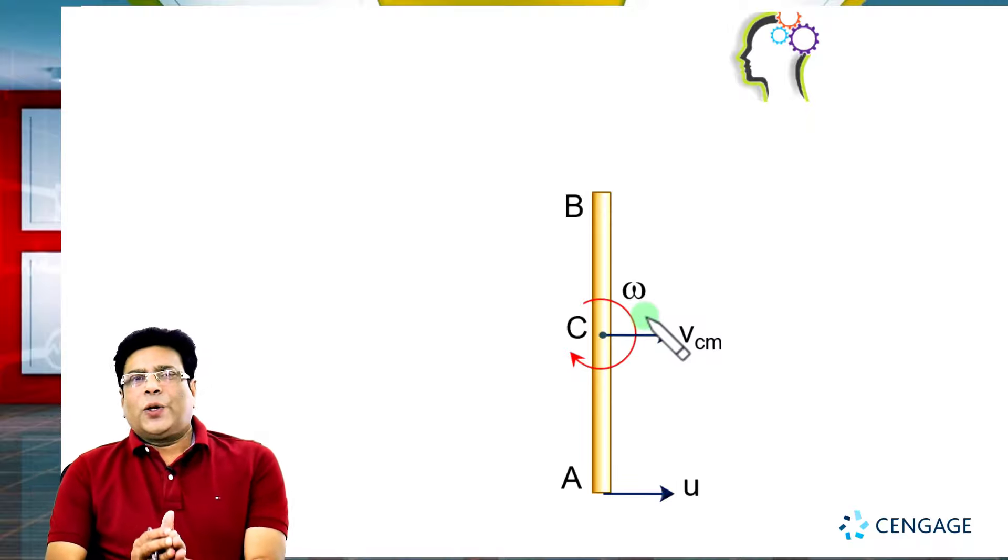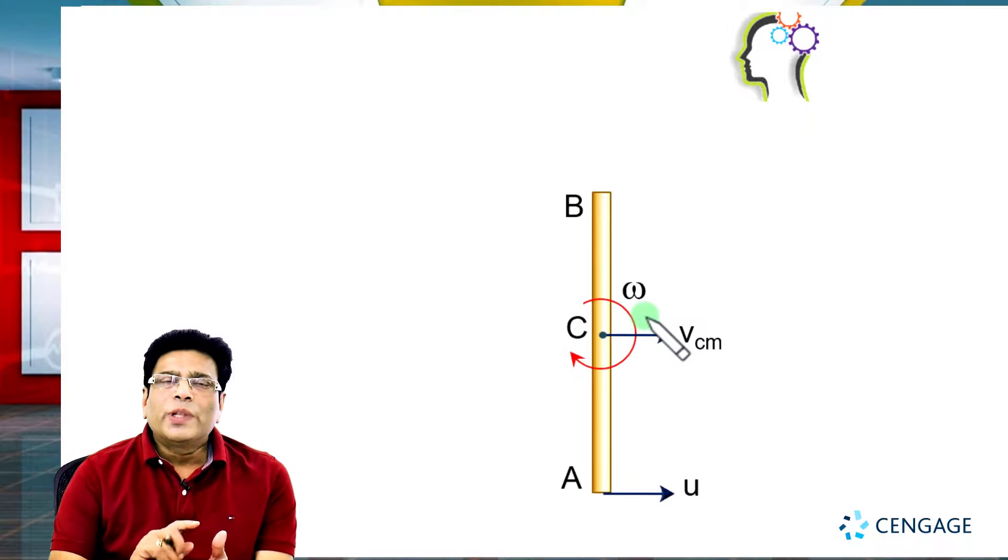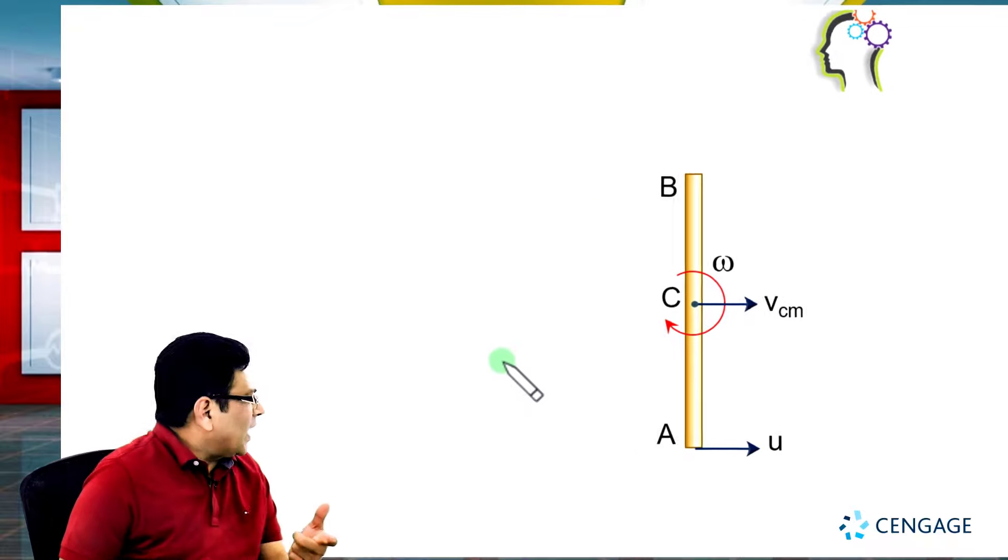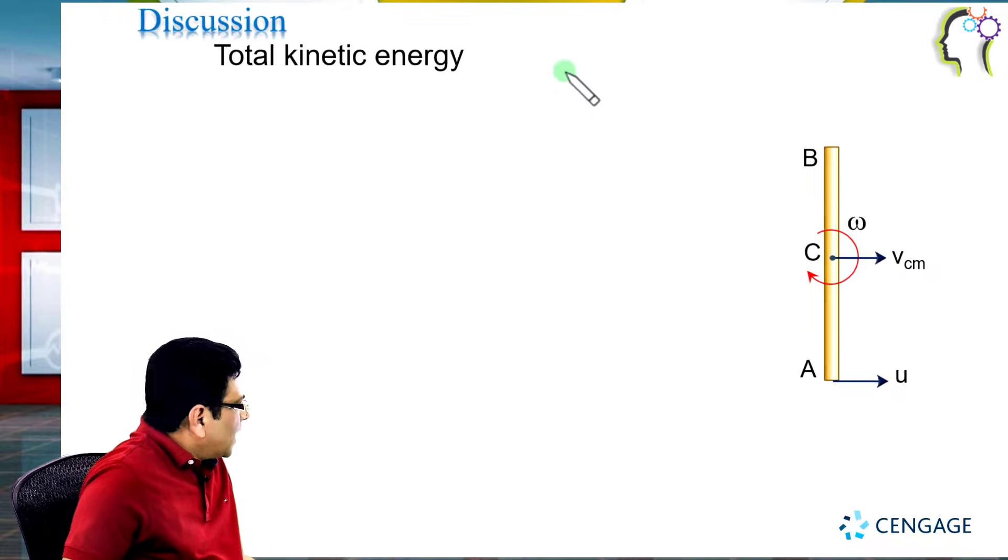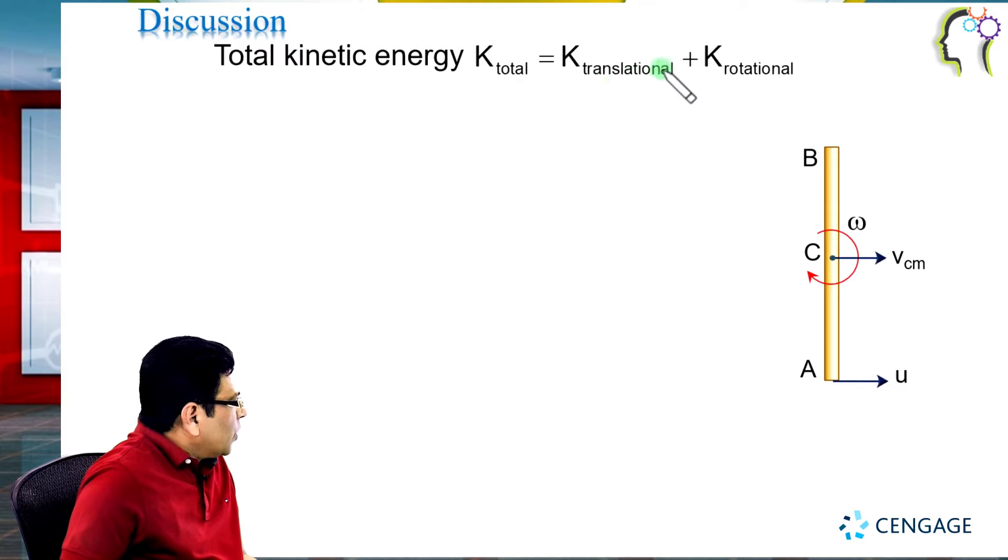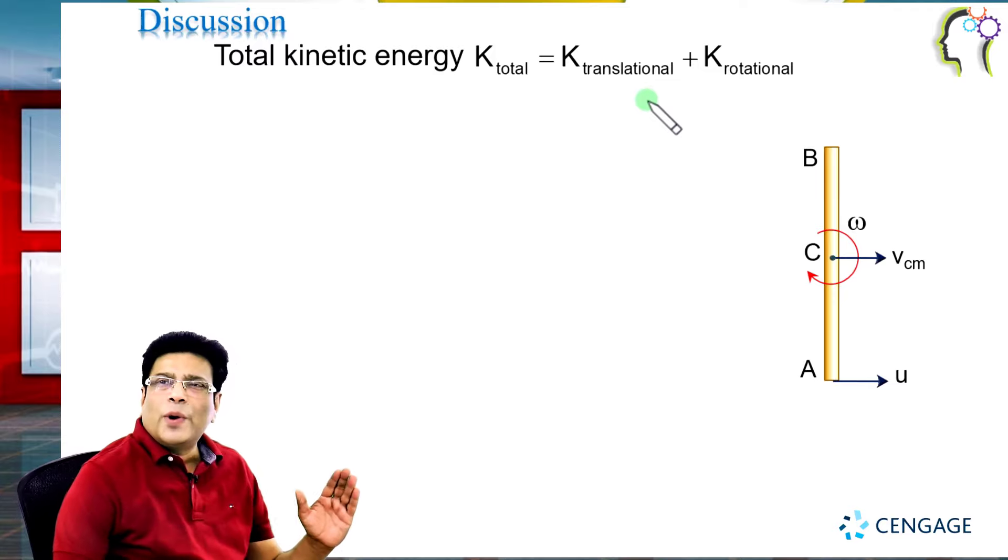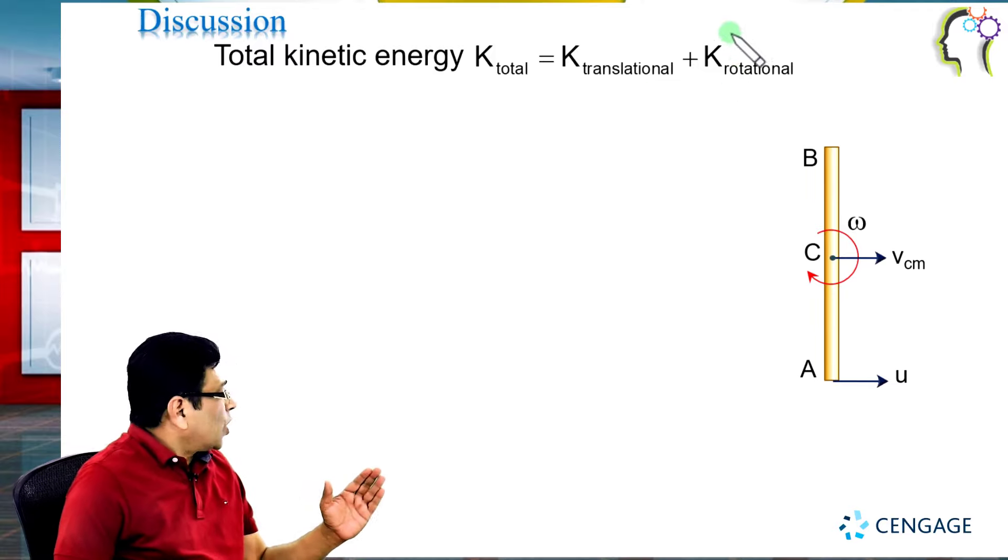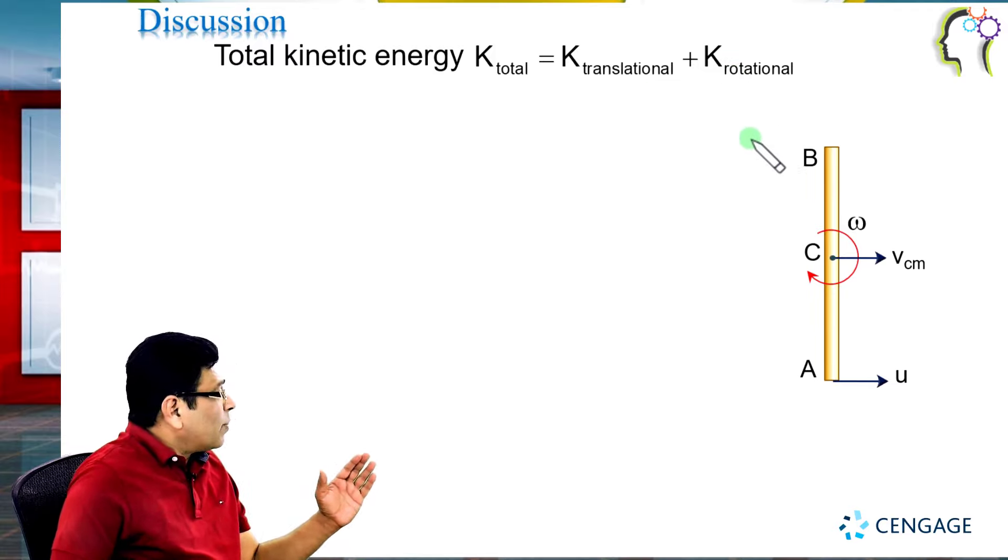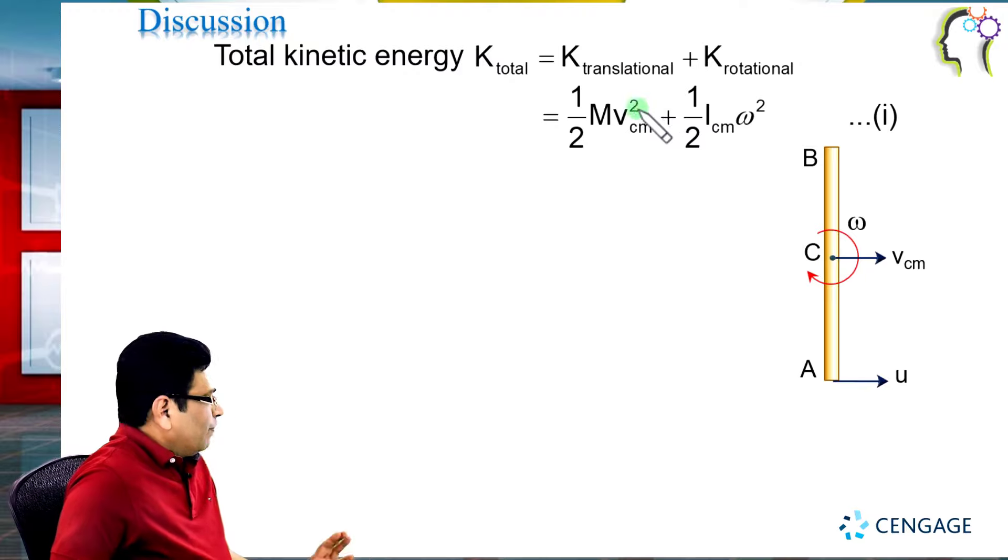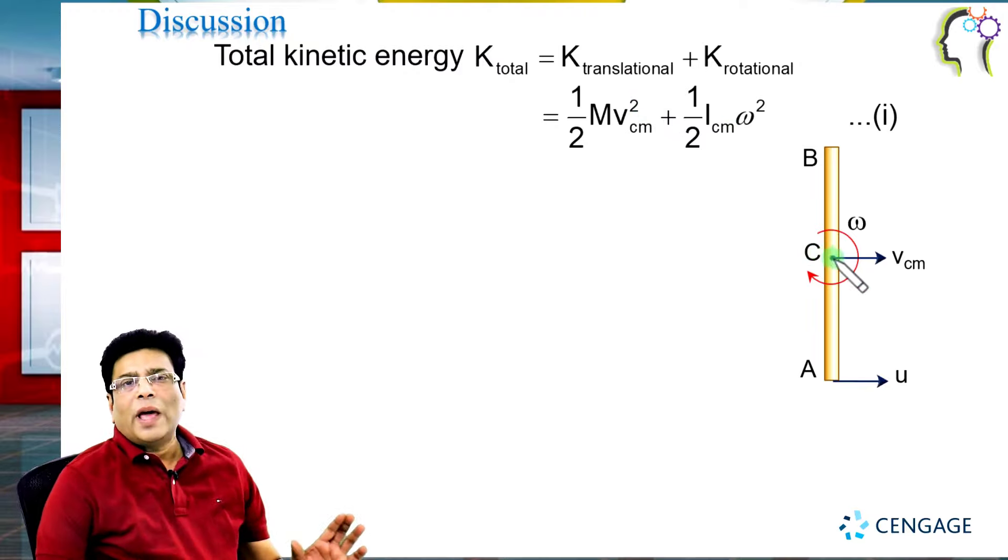Now we can write the total kinetic energy. Total kinetic energy should be the summation of translational kinetic energy plus rotational kinetic energy. Let us write this equation. We know translational kinetic energy equals 1/2 M vcm squared, and rotational kinetic energy equals 1/2 ICM omega squared. Our task is to calculate vcm because we know the ICM value is 1/12 ML squared.